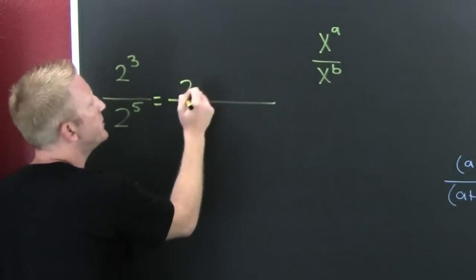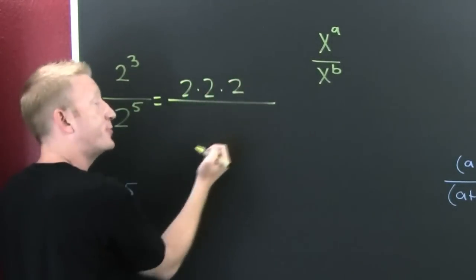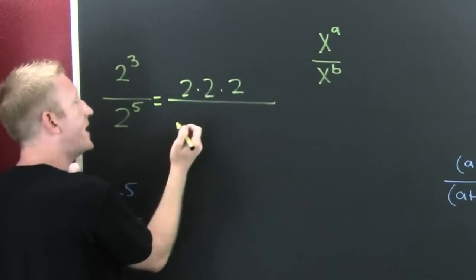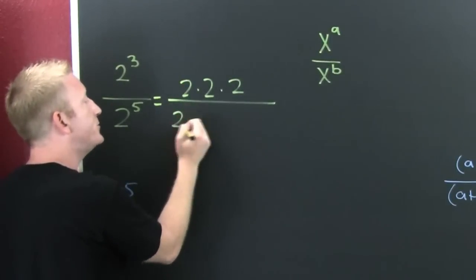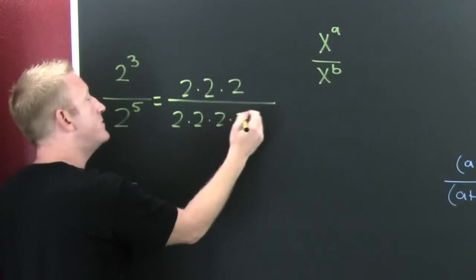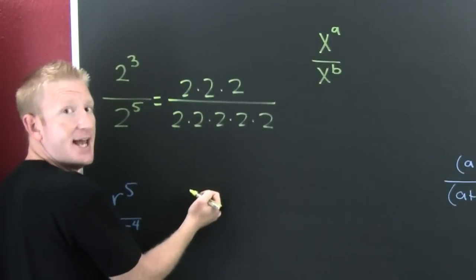This is 2 to the 3 — that's 2 times 2 times 2, three times. And then down there, that's 2 times 2 times 2 times 2 times 2, five times.